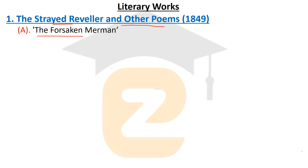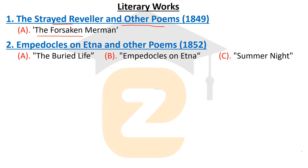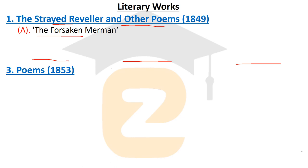The second work is Empedocles on Etna and Other Poems, published in 1852. Three important poems were included in this volume: (a) 'The Buried Life,' (b) 'Empedocles on Etna,' the title poem, and (c) 'A Summer Night.'